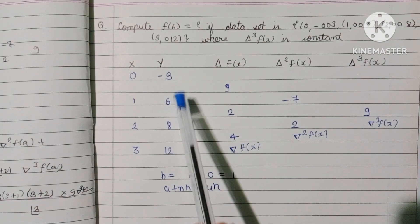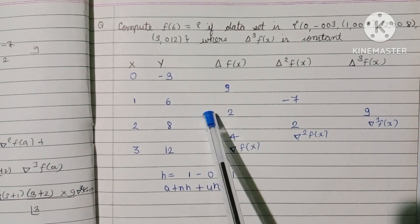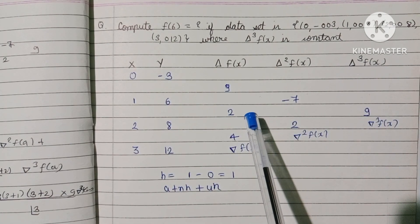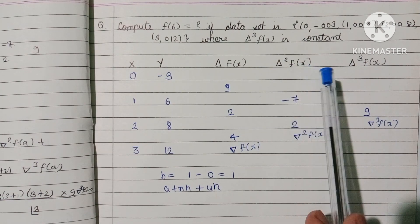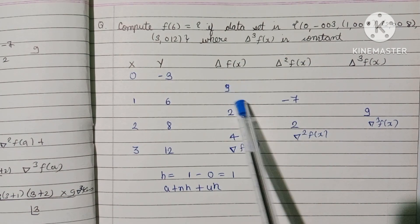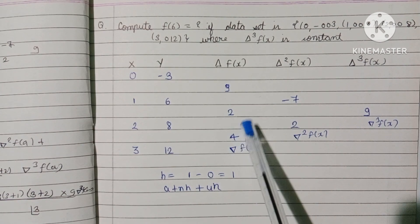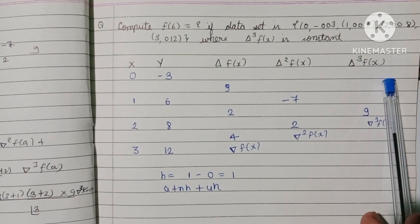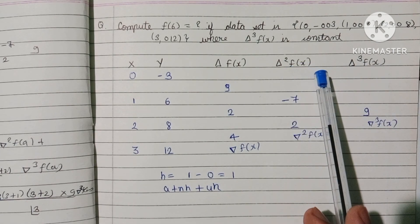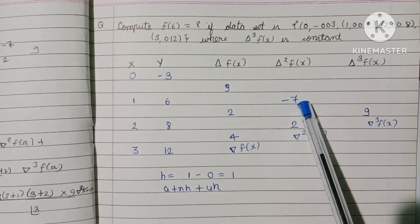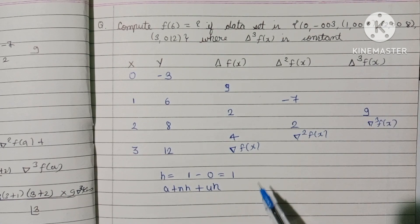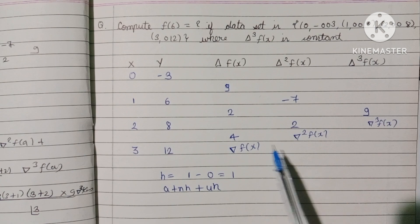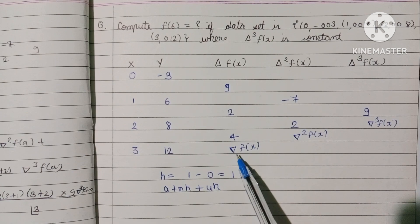The first differences ∇f(x) are: 6 minus (-3) = 9, 8 minus 6 = 2, and 12 minus 8 = 4. The second differences ∇²f(x) are: 2 minus 9 = -7, and 4 minus 2 = 2. The third difference ∇³f(x) is: 2 minus (-7) = 9.